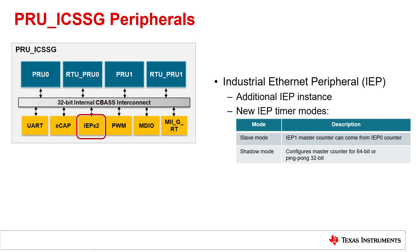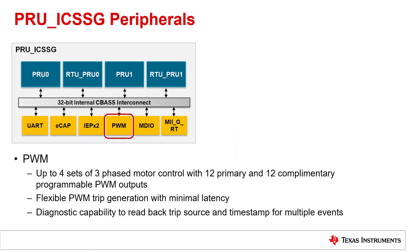There are also two additional modes enabled within the IEP timer: a slave mode, which allows one IEP instance to act as a slave to the other, and a shadow mode, which configures the master IEP counter for either 64-bit or 32-bit mode. A new peripheral to the PRU ICSSG is the PWM, which can be used for motor control applications. It supports up to four sets of three-phased motor control with 12 primary and 12 complementary programmable PWM outputs, and has very flexible trip generation.